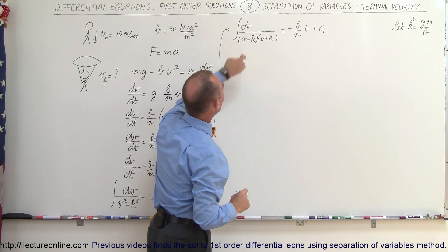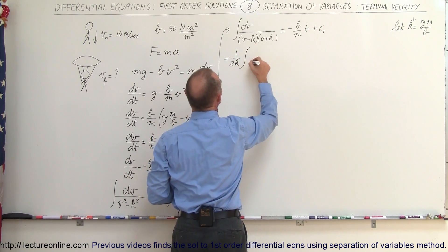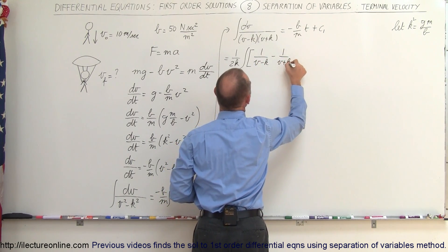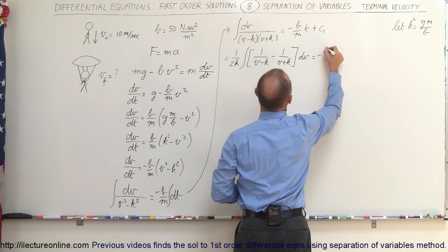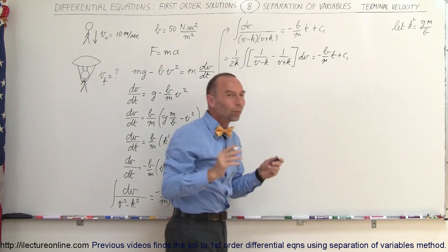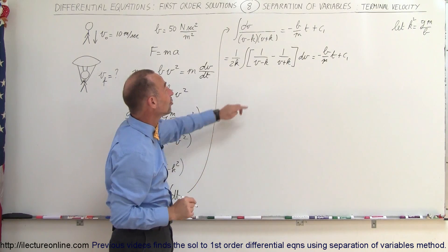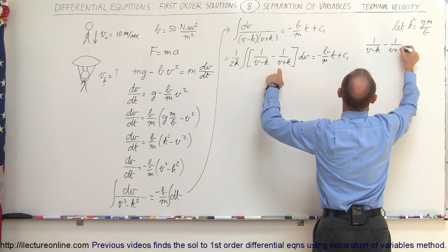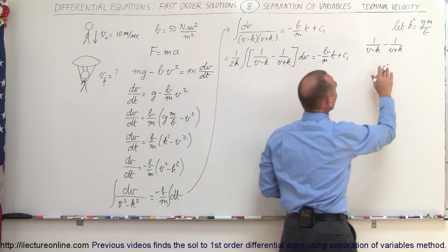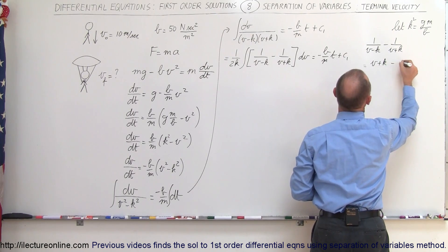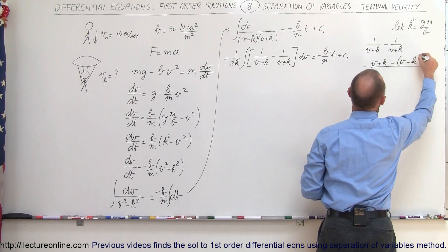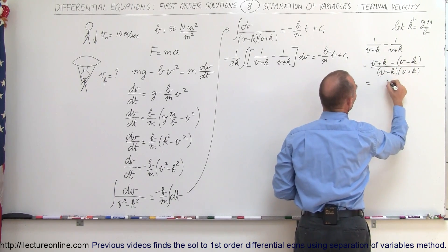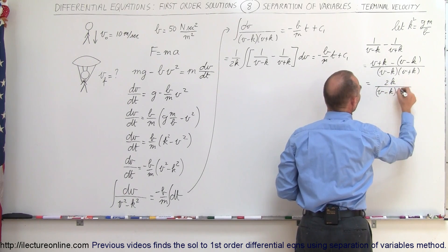The left side is the integral of dv divided by (v minus k)(v plus k). We use partial fractions: this equals 1 over 2k times the integral of [1/(v minus k) minus 1/(v plus k)] dv. To verify: 1/(v minus k) minus 1/(v plus k) over a common denominator gives (v plus k minus v minus k) over (v minus k)(v plus k), which equals 2k over (v minus k)(v plus k). Dividing both sides by 2k confirms the substitution.